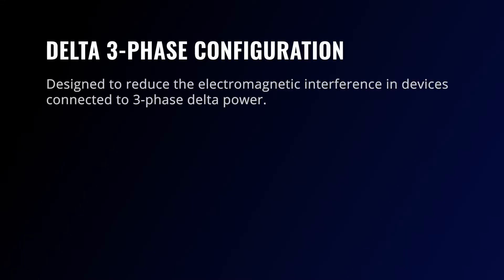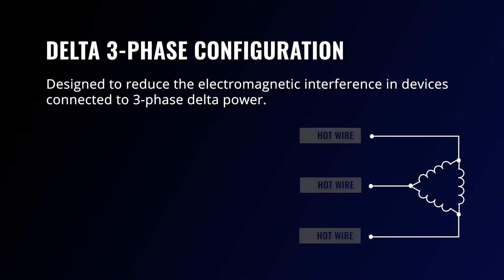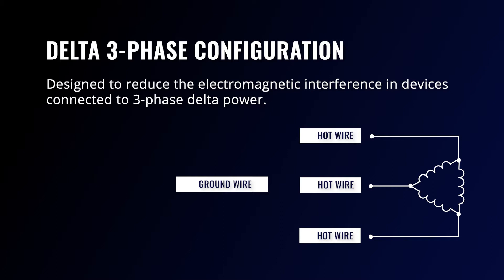Delta three-phase EMI filters are designed to reduce electromagnetic interference in devices connected to three-phase delta power. The delta configuration contains four wires: three hot conductors and one ground conductor. The phase loads are connected to each other in the shape of a triangle, where the connection is made from one end of winding to the starting end of the other, forming a closed circuit. This configuration does not have a neutral wire, but it can be fed by three-phase Y power if the neutral line is grounded. The delta system can be used for power transmission, and the absence of a neutral cable can also help reduce cost.